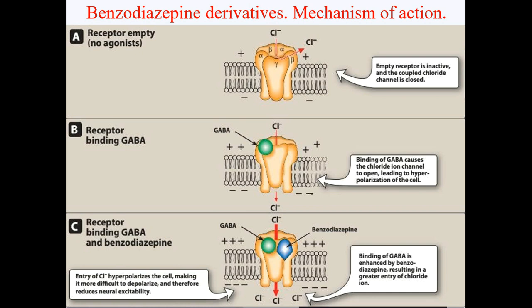Mechanism of action of benzodiazepines. In state A, the receptor is empty with no agonists — the empty receptor is inactive and the coupled chloride channel is closed. In state B, receptor binding GABA causes the chloride ion channel to open, leading to hyperpolarization of the cell. In state C, receptor binding both GABA and benzodiazepine: binding of GABA is enhanced by benzodiazepine, resulting in greater entry of chloride ions. Entry of chloride hyperpolarizes the cell, making it more difficult to depolarize and thereby reducing neural excitability.